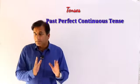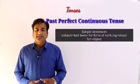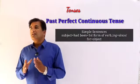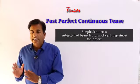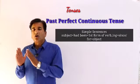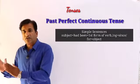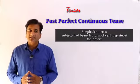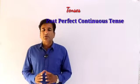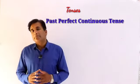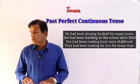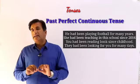The grammatical arrangement of simple sentences is: Subject + helping verb 'had been' + first form of verb with -ing + since or for + object at the end. Now we see how sentences are formed. 'He had been playing football for many years' — وہ کئی سالوں سے فوٹبال کھیل رہا تھا۔